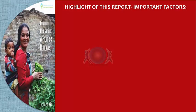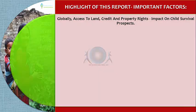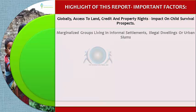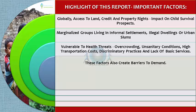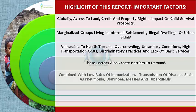To summarize the UN report's highlights: globally, access to land, credit, and property rights has a great impact on child survival prospects. Marginalized groups living in informal settlements, illegal dwellings, and urban slums are more vulnerable to health threats due to overcrowding, unsanitary conditions, high transportation costs, discriminatory practices, and lack of access to basic services. These factors create barriers that impede the use of services by the most disadvantaged populations.